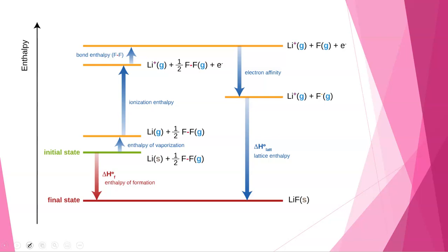In a Born-Haber cycle, we're going to start at some initial state, and in that initial state we're going to have two elements, in this case lithium and fluorine, in their separate elemental forms. So our lithium is a solid piece of metal, and our fluorine is a gas floating around in a diatomic state.